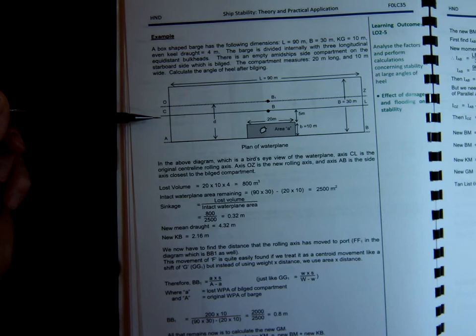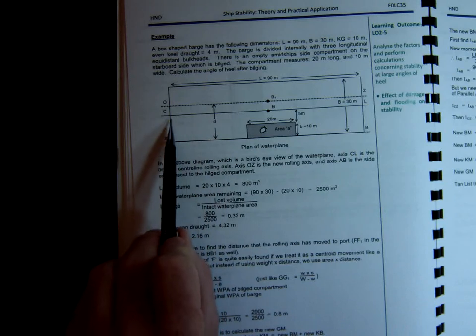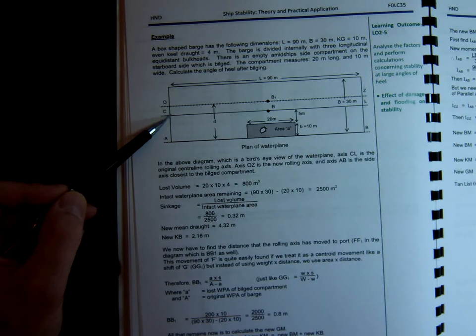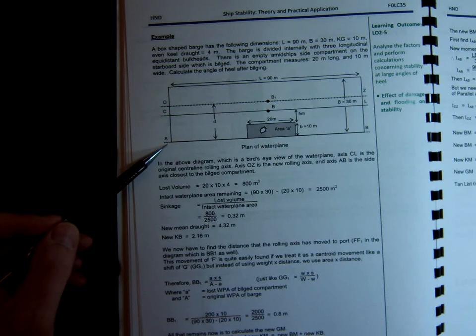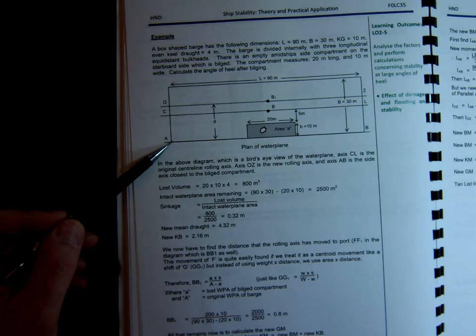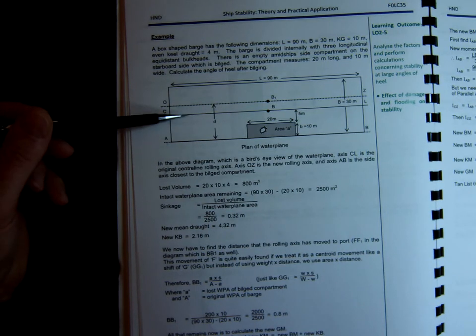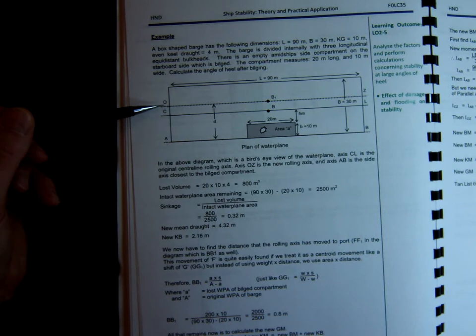Let's look at the values that are written on here. It's a bird's eye view of the vessel. And we're looking at the water plane. CL, this axis, is the original centerline or rolling axis of the vessel. So when the vessel wasn't bilged, CL was the centerline or rolling axis. OZ represents the new rolling axis after we've been bilged. And AB represents the side axis closest to the bilge compartment. These values are important because when we're calculating inertia or second moment of area, we need to calculate this value here at AB, and then we need to get back using the parallel axis theorem to the OZ line there to work out the angle of list.